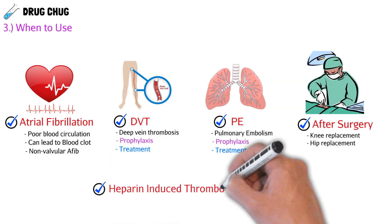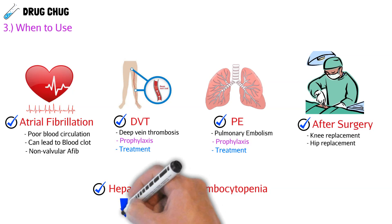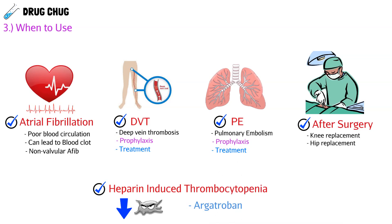There's one unique indication to highlight: heparin-induced thrombocytopenia, or HIT. If a patient was on heparin — typically used during surgery — they can develop a condition where the body attacks its own platelets, similar to an autoimmune response. The platelets drop dangerously low and the patient can bleed severely. To treat HIT, the go-to agent is argatroban.